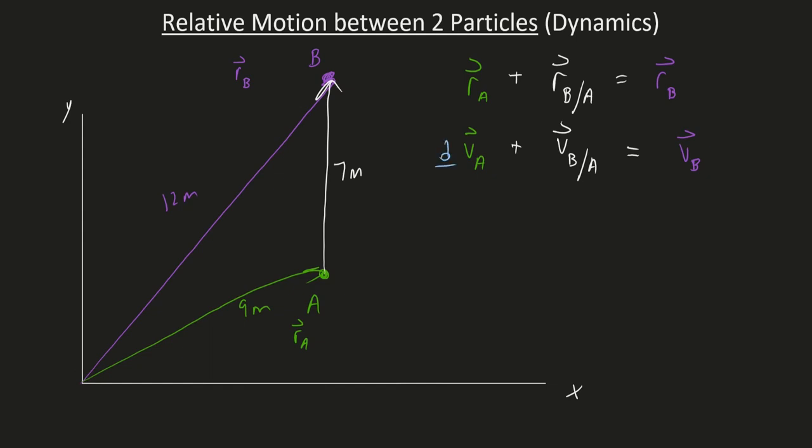I can do the derivative of each one of my terms here, and taking the derivative of velocity as acceleration. So, the true acceleration of A plus the acceleration of B, but from the perspective of A, is equal to the true acceleration of B.